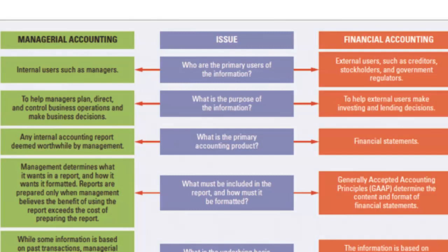Understanding what makes financial and managerial accounting different is important, because throughout this course you'll be thinking about why you need to evaluate a particular product. Internal users like managers want to make sure a product is profitable. For example, if you're manufacturing a product, you need to know how much it costs to manufacture it. Why would a manager need to know that? The reason is because they need to determine what the appropriate selling price is and whether they're covering costs sufficiently to achieve a certain level of profitability.